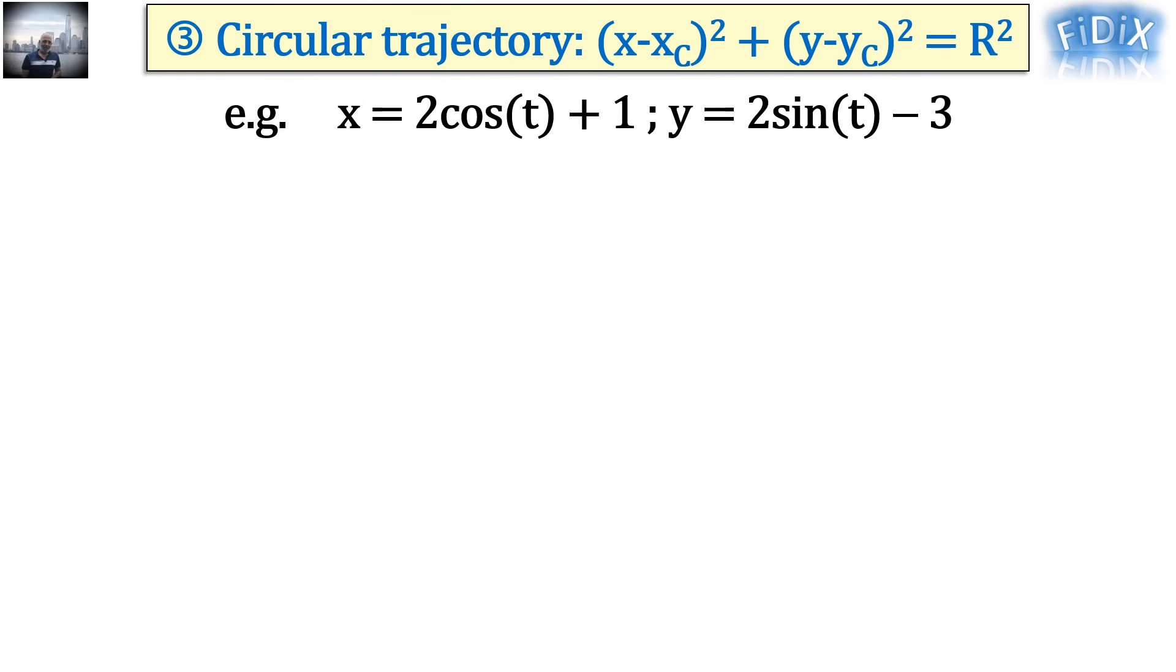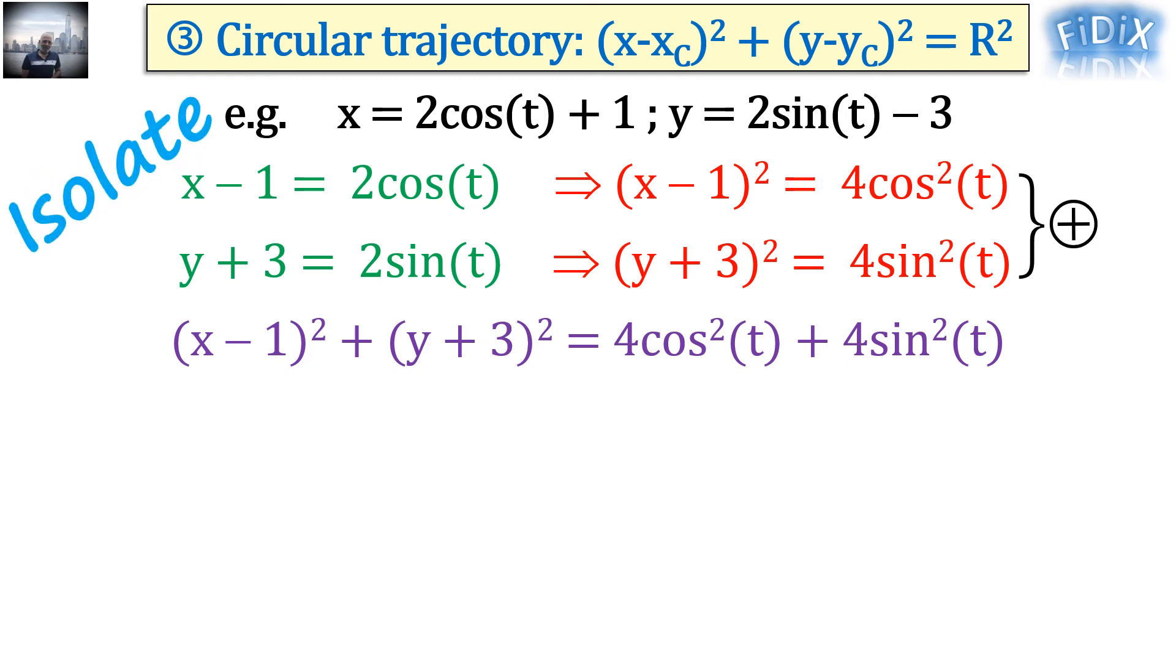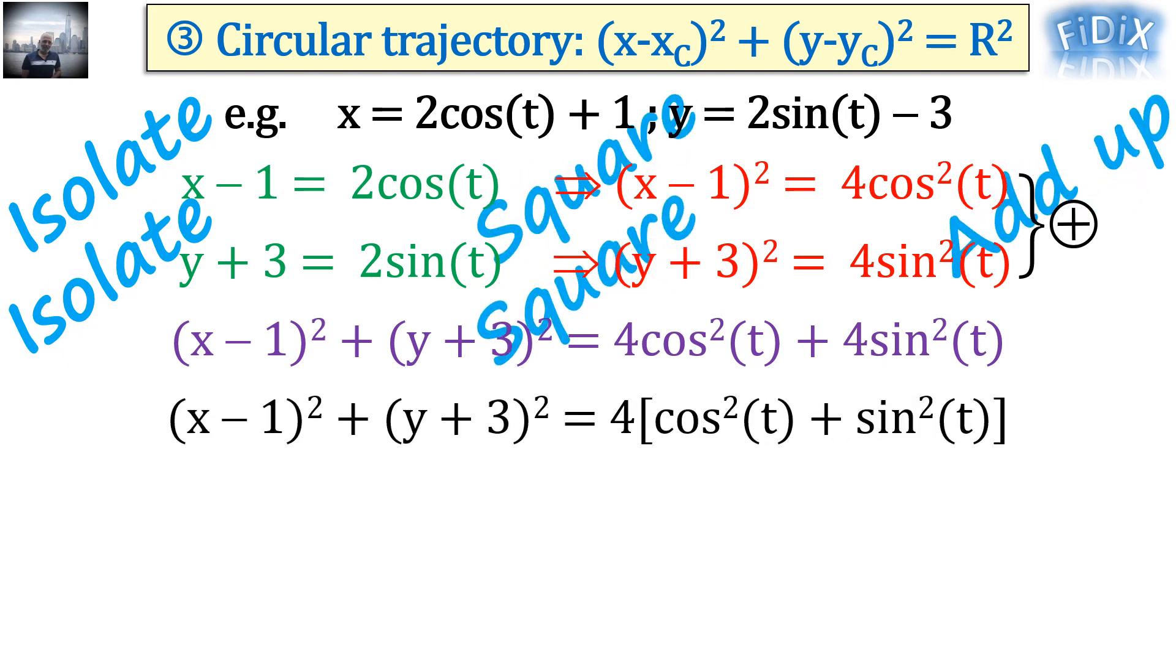For example, if we have a moving point with the following coordinates x equals 2 cosine t plus 1 and y equals 2 sine t minus 3, and we are asked to determine its trajectory equation and nature, what we can do is isolate cosine and sine in the given equations, then square each equation and add them up. Note that this method of isolate, square, and add up will let us factorize and get cosine squared plus sine squared, which is equal to 1.